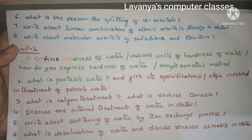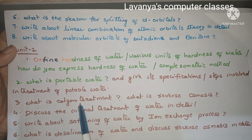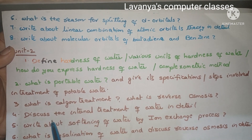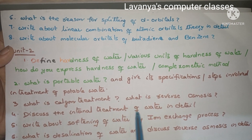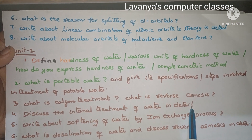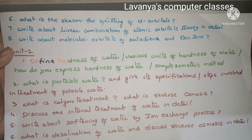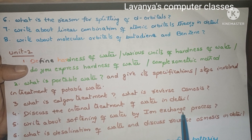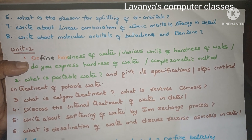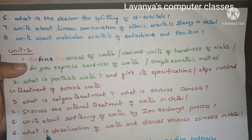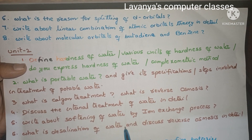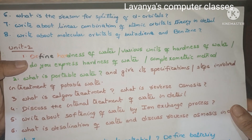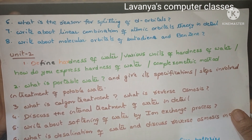Next important question: what is Calgon treatment? What is reverse osmosis? Discuss the internal treatment of water in detail. Write about softening of water by ion exchange process. And last one is: what is desalination of water, and discuss reverse osmosis in detail. These are the important questions in Unit 2.